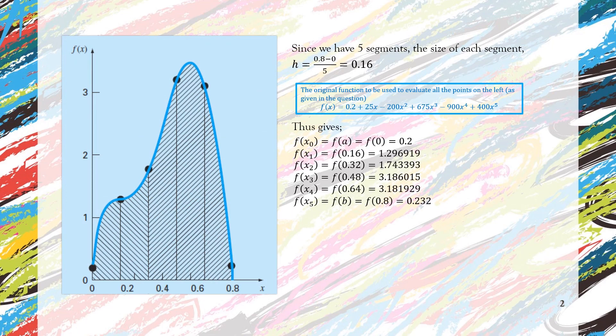By the figure on the left we can see that from a = 0 to b = 0.8, we have the equally sized segments. So the size of each segment is 0.16.